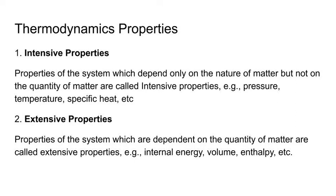Extensive properties — properties of the system which are dependent on the quantity of matter are called extensive properties. Example: internal energy, volume, enthalpy, etc. Maatratmak gun — ye vya gun hain jo tantr mein upasthit pradhaat ki maatra par nirbhar karti hain, jaise: maas, ayatan, ushmadharita, antrik urja, entropy, Gibbs mukta urja, aadi. Aise gun hain jo pradhaat ki maatra mein parivartan se parivartit ho tete hain. Aise gunn ko tantr ke maatratmak gun kehte hain. Yadi tantr ko hum suvidha anusar ek ya ek se adhik mein vibhajit kar rakhha ho, to tantr ke kul maatratmak gun uske vibhin bhaagon ke maatratmak gunn ke yog ke barabar hoti hai.